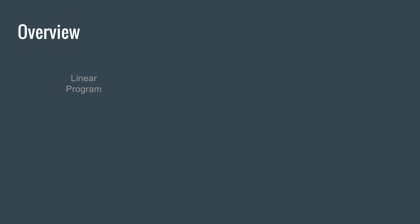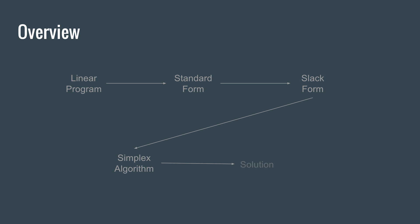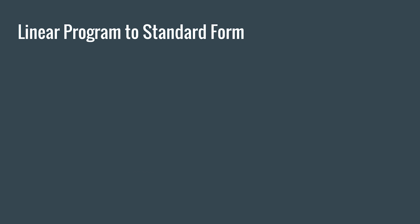Given a linear program, before we put it into the simplex, we need to convert it into standard form, then into slack form. Then we can put it into the simplex algorithm and get a solution out. So first, we're going to learn how to convert a linear program into standard form.